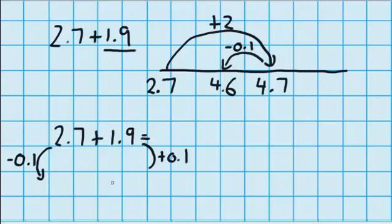If I do that, that means 1.9 becomes 2.0 or just 2. And because I'm taking that tenth away from this side 2.7 minus 0.1 becomes 2.6. And again, I've got a really easy question to answer now. 2.6 plus 2 equals 4.6.